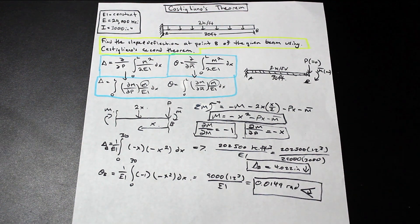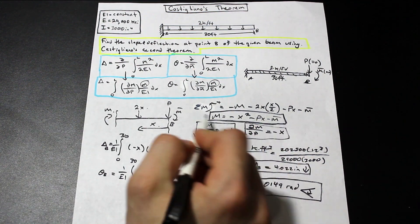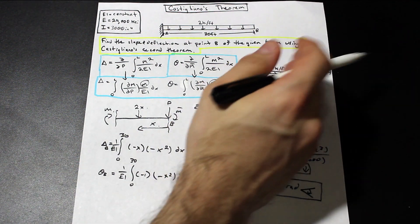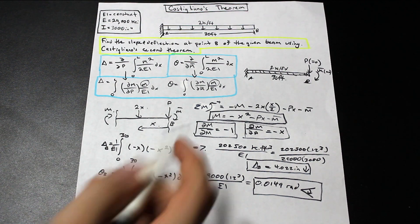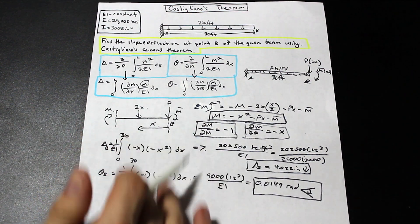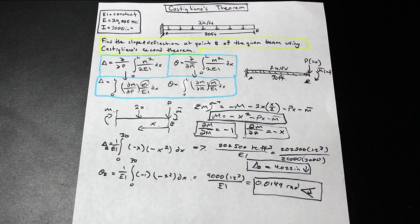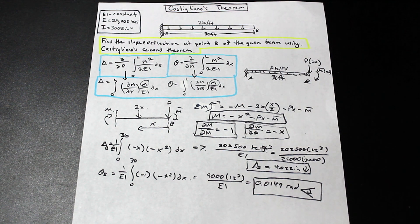A pretty simple example. The key takeaway is that you can find both deflection and slope from the same M expression — you don't need to write two separate M expressions. Just write M once, take the appropriate partial derivative for each quantity, and plug into the respective formulas to get your deflection and slope. If you're enjoying the channel, hit the subscribe and like buttons — thank you for all the support and thanks for watching.